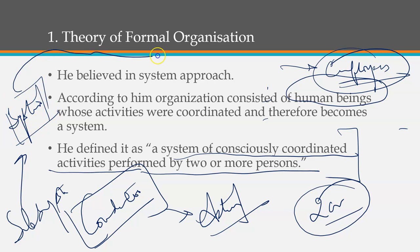He defined formal organization as a system of consciously coordinated activities performed by two or more persons. When two or more people perform activities that are coordinated with each other, working in their sub-systems, and those sub-systems join together, a system is formed — and that system is what we call a formal organization. He believed in the system approach of organization.